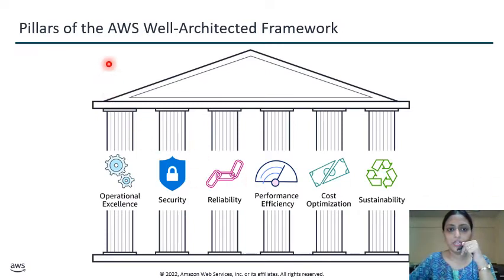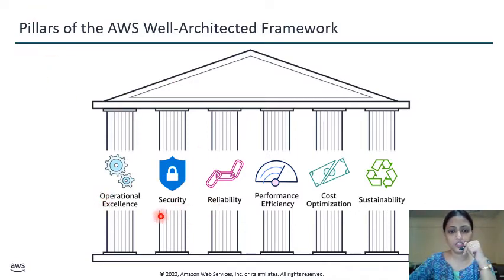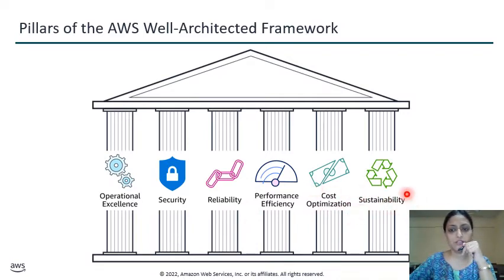Here we have six pillars of the AWS Well-Architected Framework: Operational Excellence, Security, Reliability, Performance Efficiency, Cost Optimization, and Sustainability.